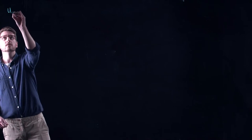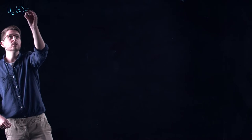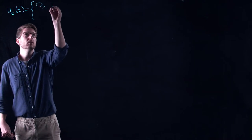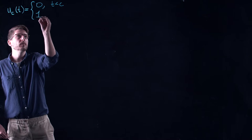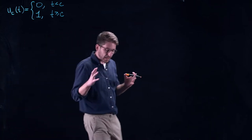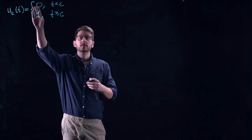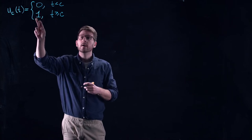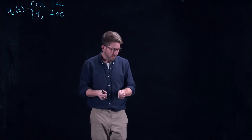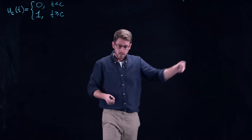One of the simplest ways that we can describe this sort of on-off phenomenon is through what's known as the Heaviside function. I'm going to denote the Heaviside function as u_c of t, which is equal to 0 when t is less than c, and 1 when t is greater than or equal to c. You can see this is really capturing the on-off phenomenon — if you think of 0 as off and 1 as on, I'm waiting until time c and then turning it on.